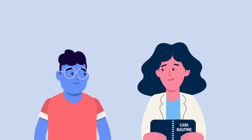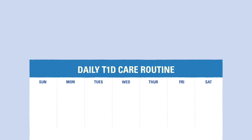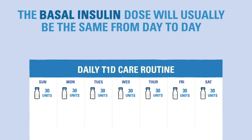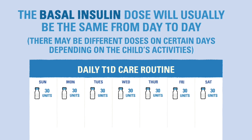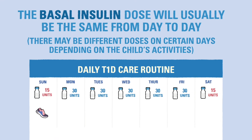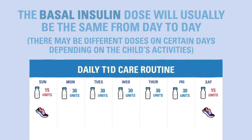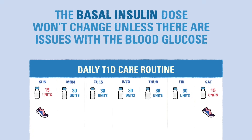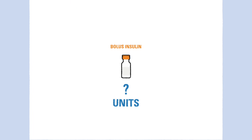Your diabetes care team will establish a care routine showing how much insulin is needed throughout the day. The basal insulin dose will generally remain the same from day to day, or in some cases you'll see different doses for specific days of the week depending on the child's activities. The basal dose will probably stay the same until you notice issues with the child's blood glucose, or until their next clinic visit where the diabetes care team will reevaluate their numbers.